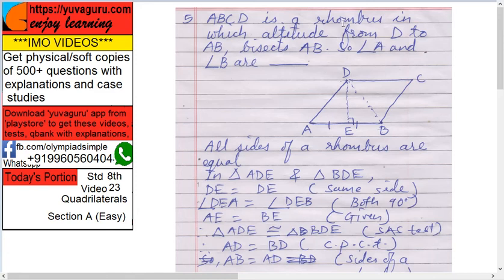ABCD is a rhombus in which altitude from D to AB bisects AB. Angle A and angle B are here.